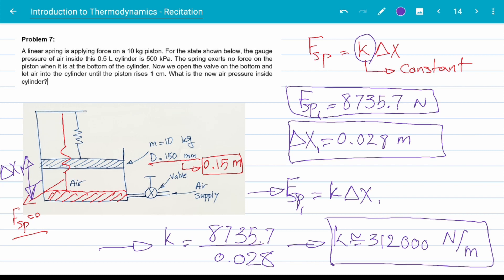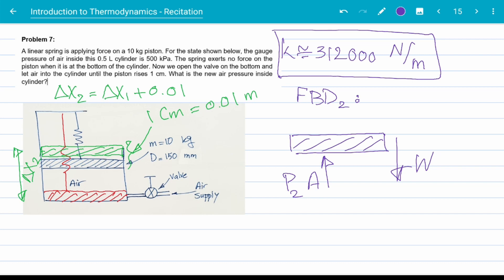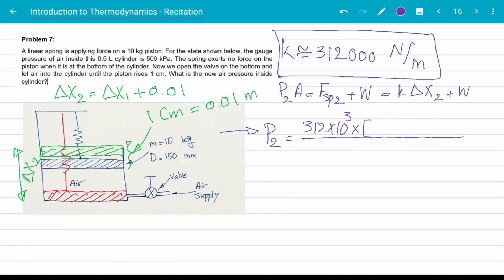K is around 312,000 N per meter. Okay, now we have everything to find the new pressure when piston is raised 1 centimeter. Delta X2 is delta X1 plus 1 additional centimeter or 0.01 meters. Free body diagram for our new state is shown here. P2 times A is equal to the new spring force F of spring 2 plus the weight. Plug in everything we have and do some algebra and we get P2 is equal to 676,571.7 pascals.